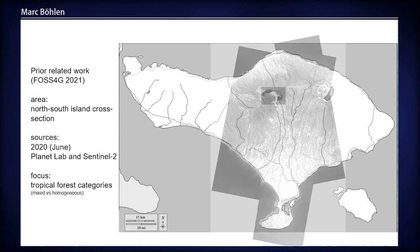We build here on prior work presented at PhosphorG last year, in which we described our data sources and attempts to differentiate tropical forest canopy into multiple subcategories, specifically mixed versus homogeneous forest types.